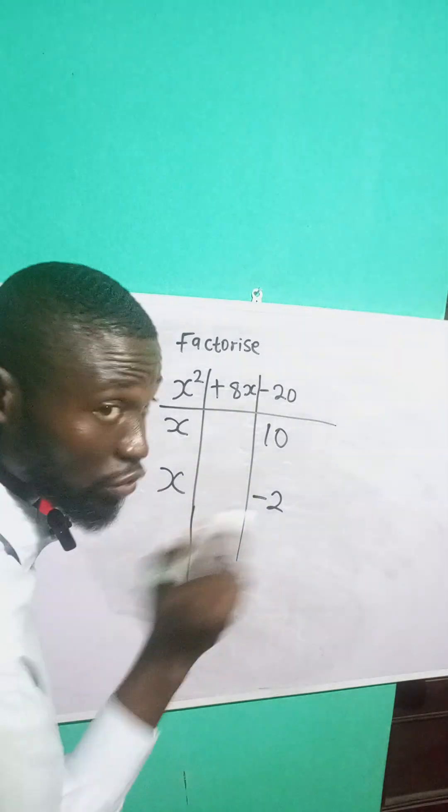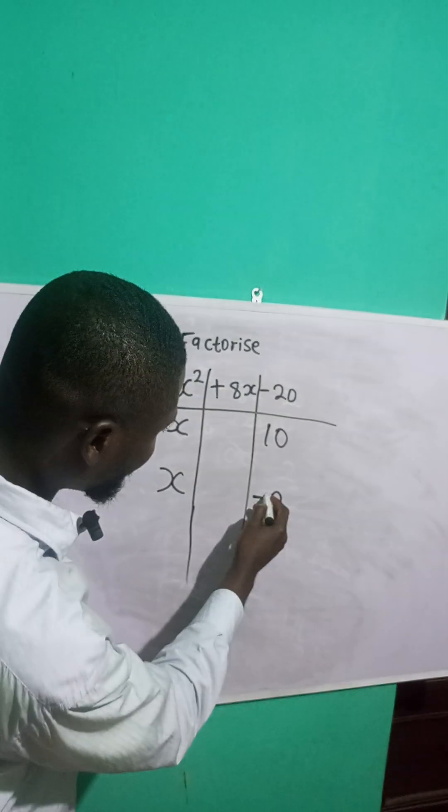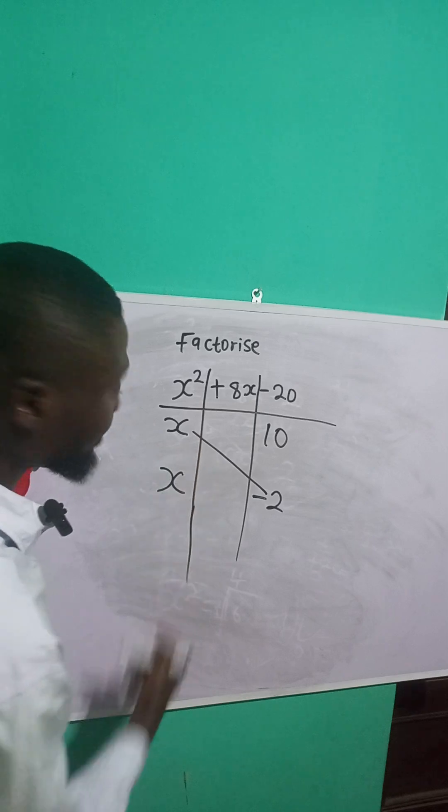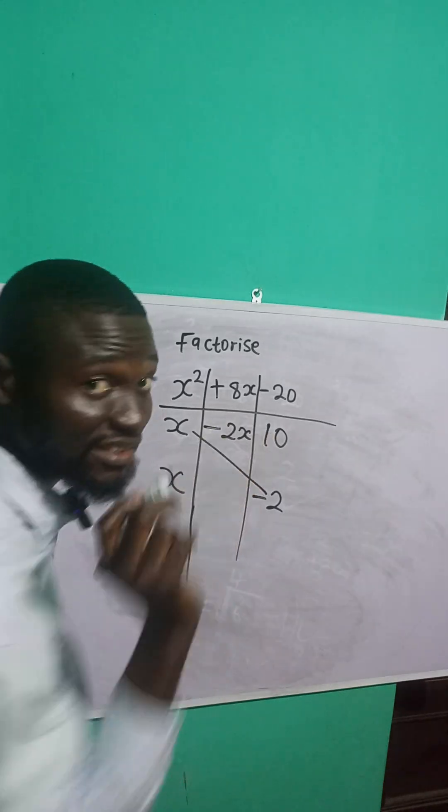Now, after that, I will cross multiply like this. So minus 2 times x is what? Minus 2x, right?